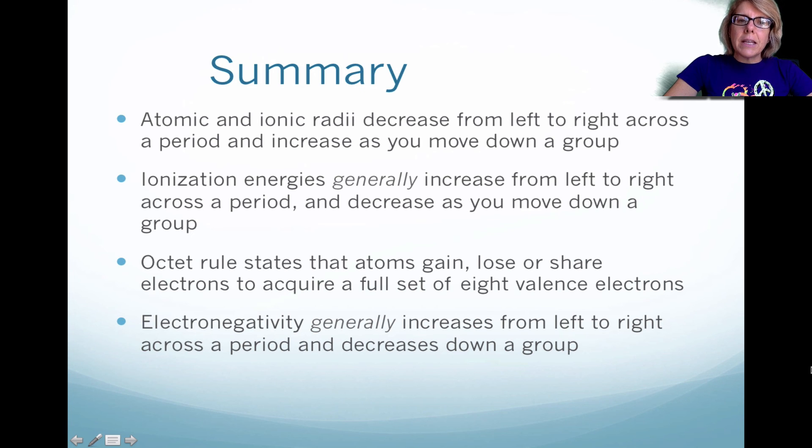In conclusion, atomic and ionic radii decrease when you're going left to right across a row, and they actually increase when you go down a group. Ionization energies increase from left to right across the period, and they actually decrease when you move down a group. The octet rule, and this is something we'll go over and over each time. The octet rule, they will either gain, lose, or share electrons to get eight electrons in their outer orbit. And lastly, electronegativity, the increase is typically left to right across a period, and it actually goes down when you go down a group.